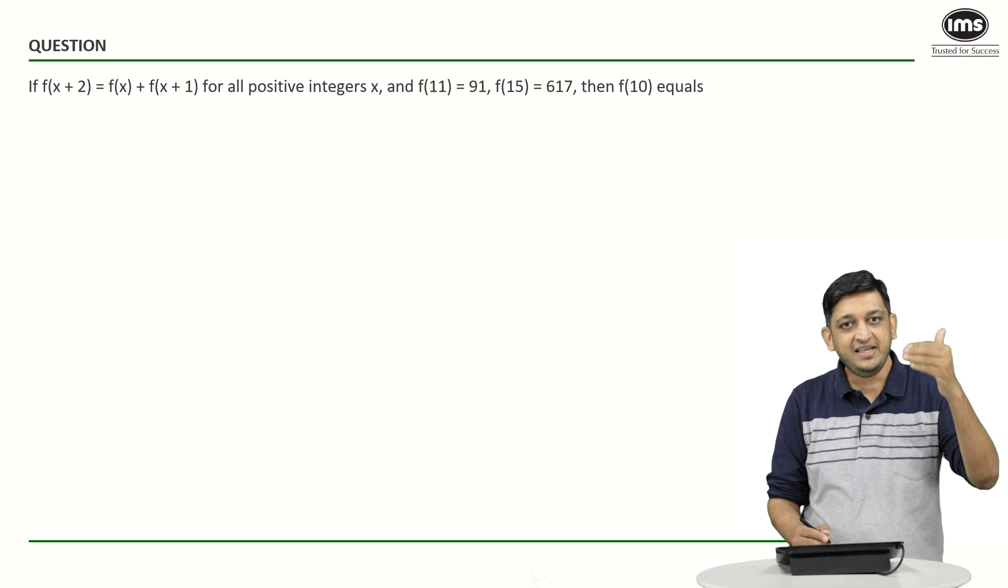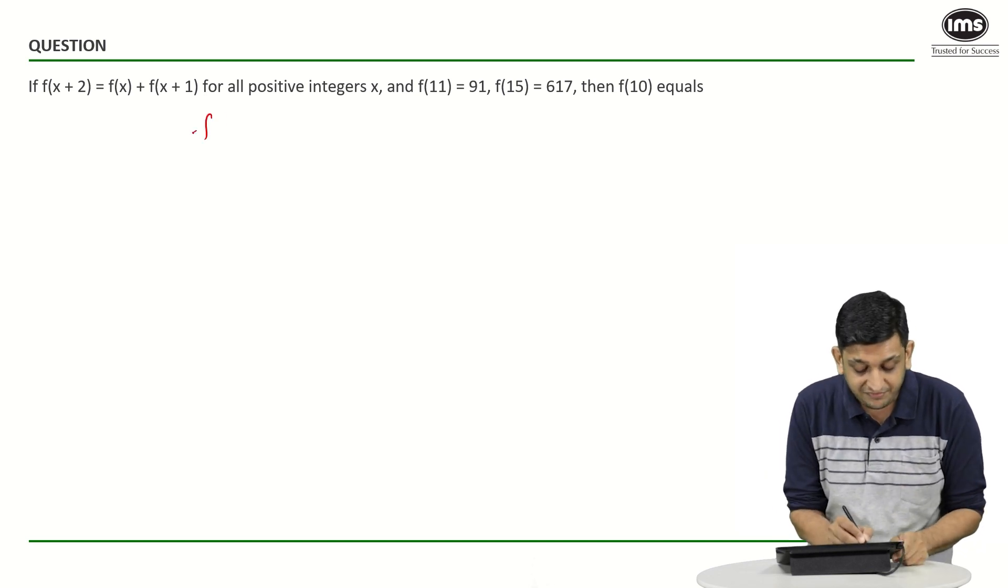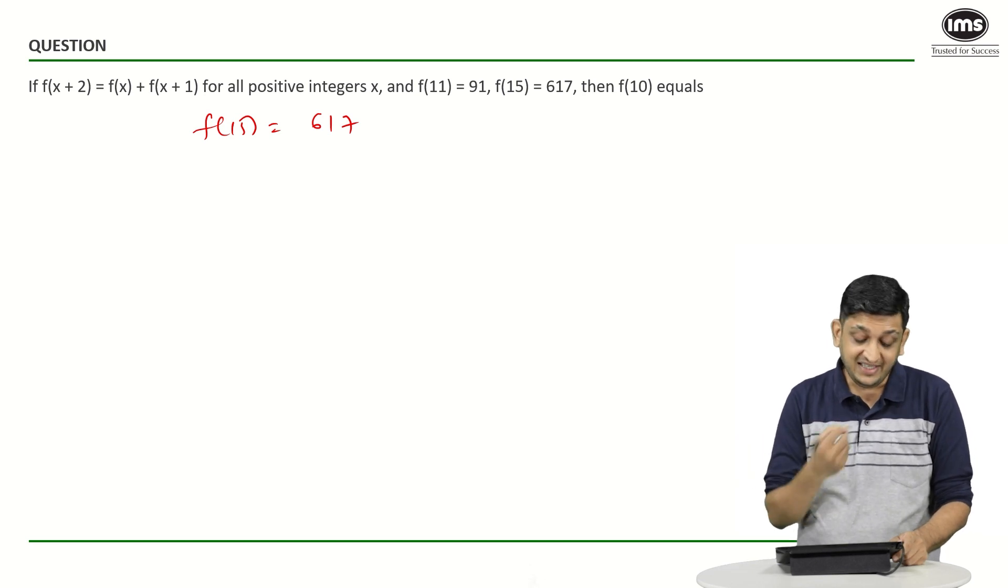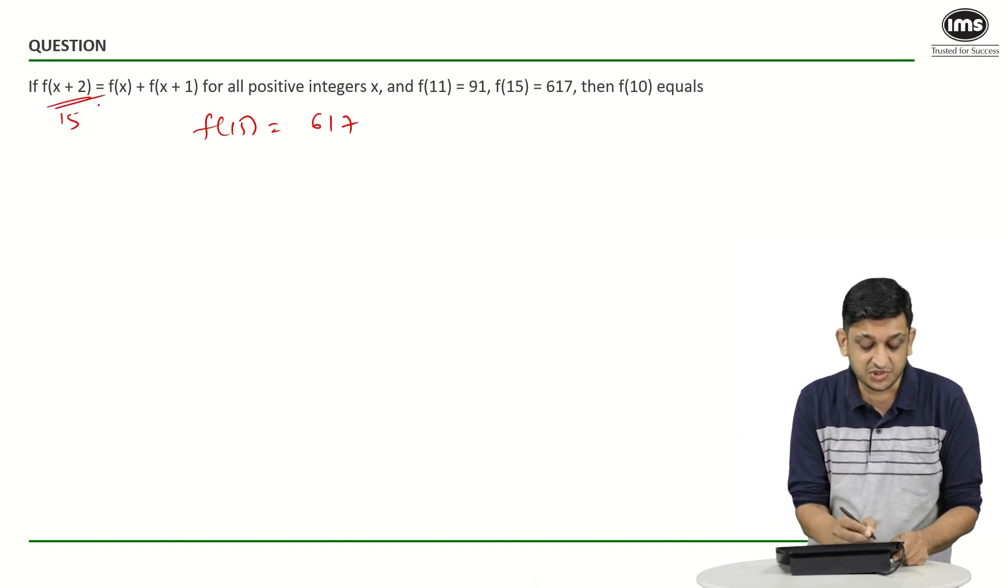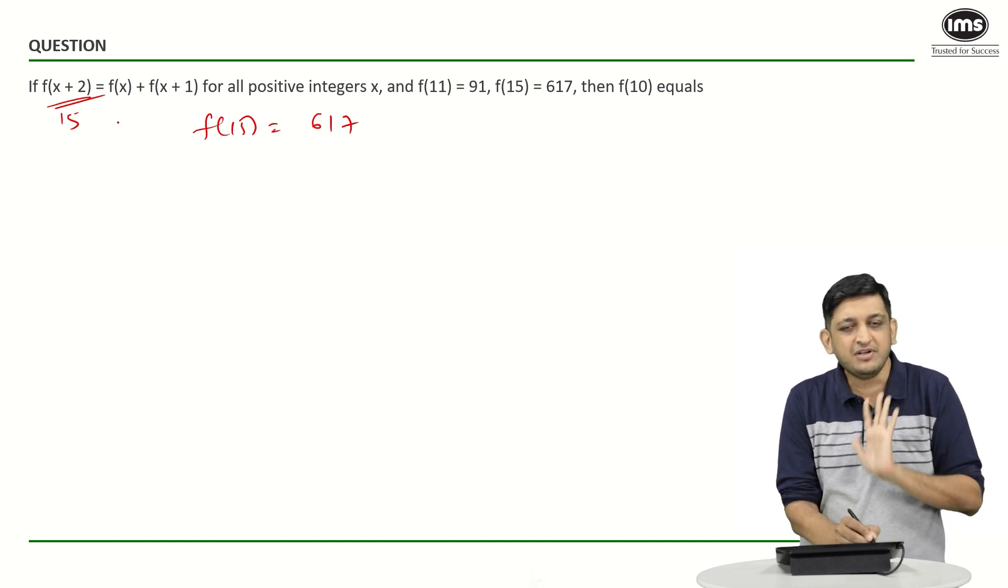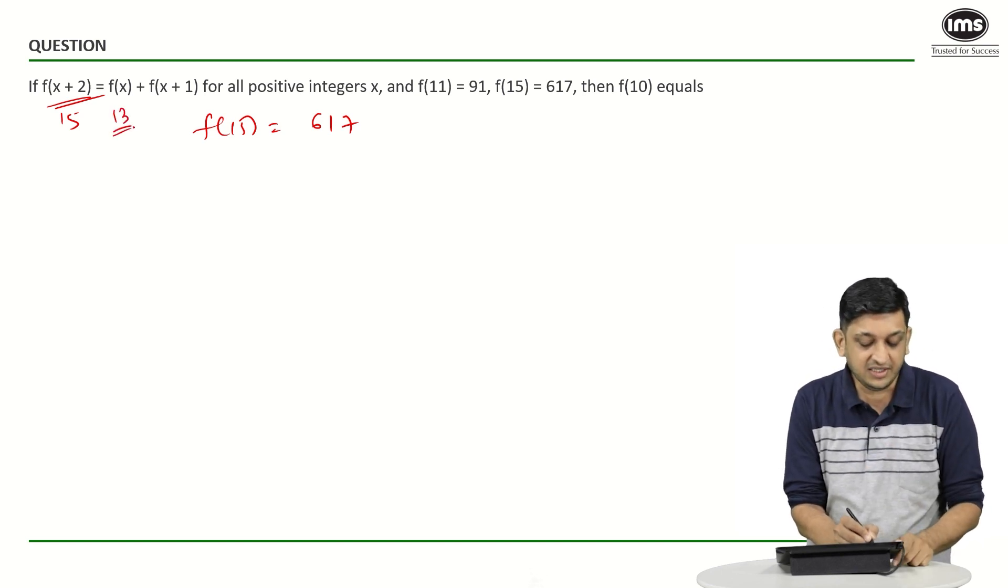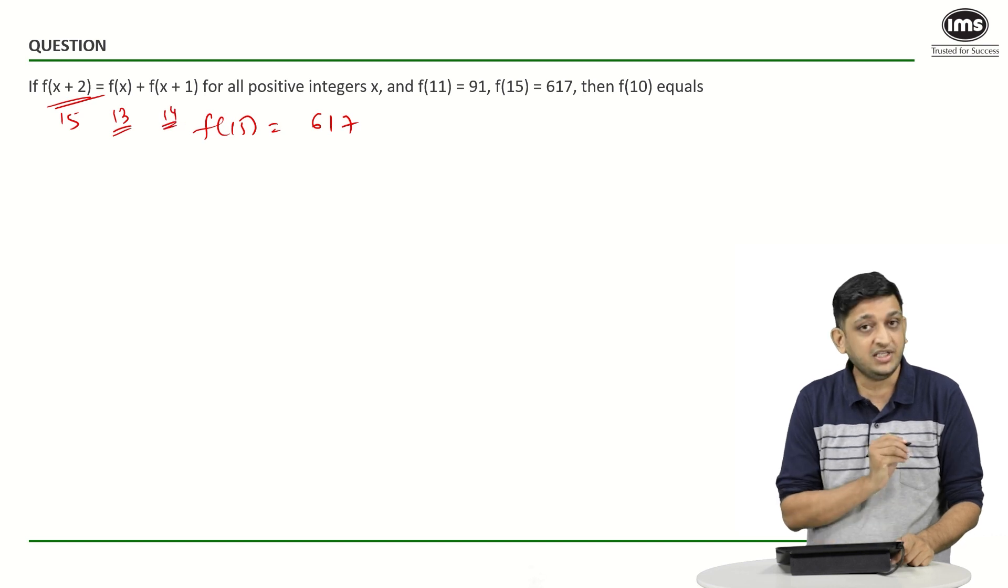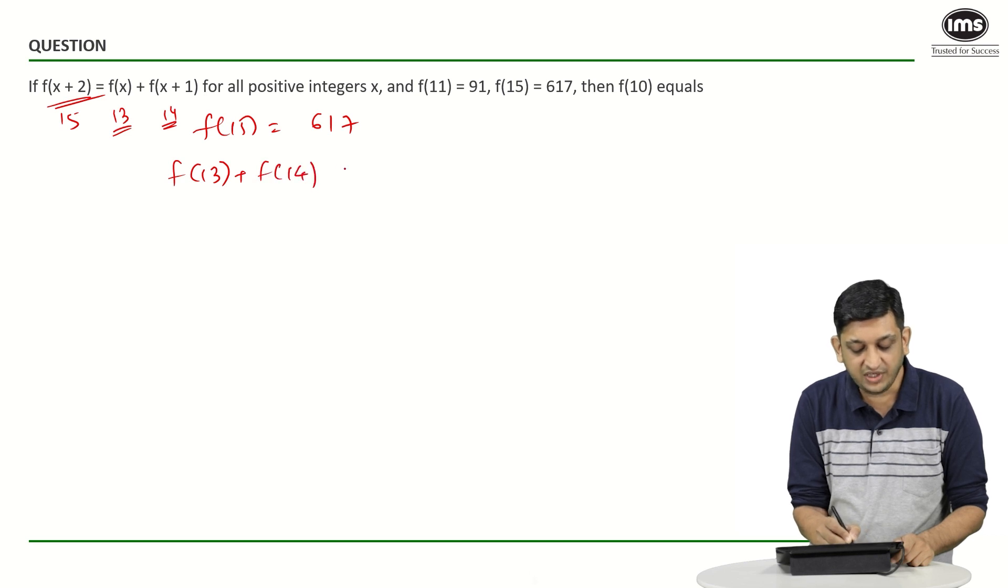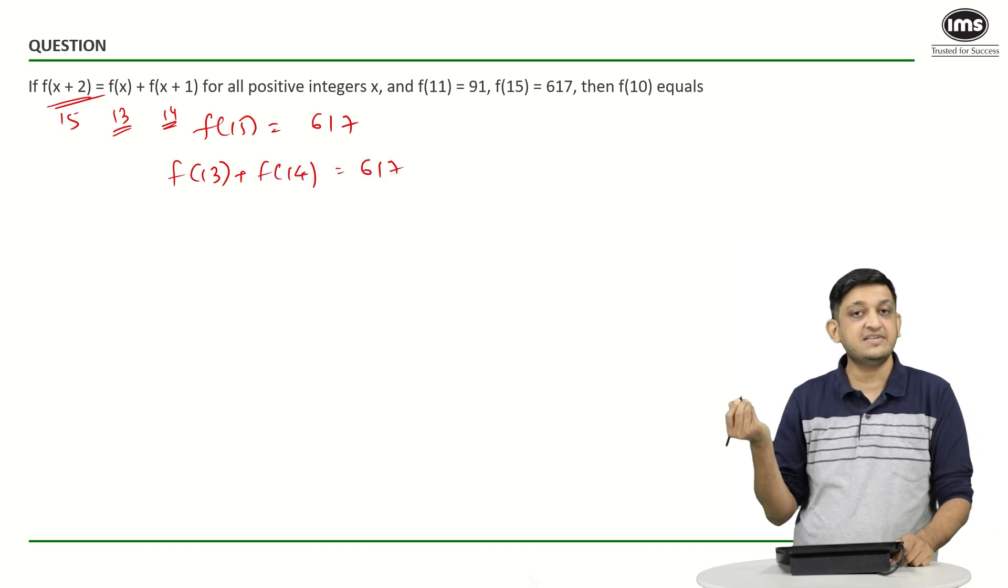Let us start from the very end. Let us start with f(15). f(15) is 617. But if x+2 is 15, what can we say is the value of x? x+2 equals 15, so x will be equal to 13, x+1 will be equal to 14. Can I also say that f(13) + f(14) will be equal to 617? We can obviously say that.